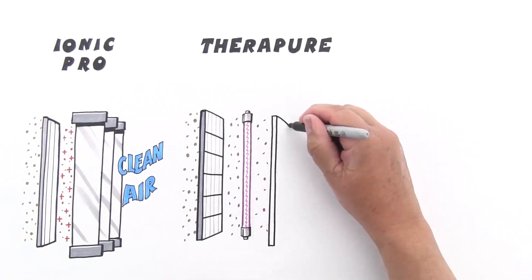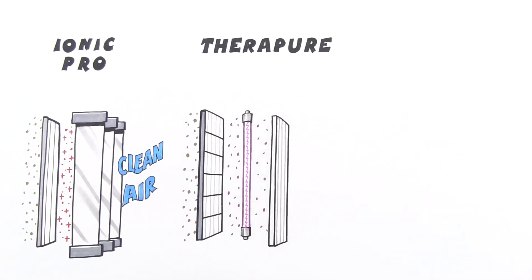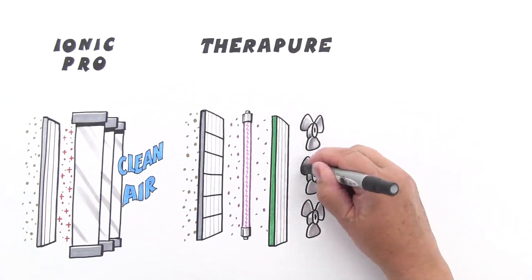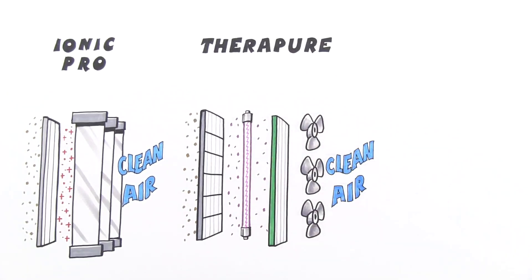Finally, the VOC filter neutralizes the volatile organic compounds, or toxic fumes, into harmless molecules like oxygen. Different fan modes allow you to choose your cleaning speed.